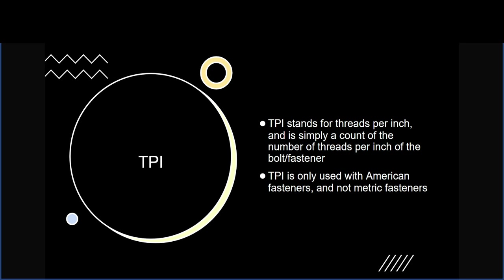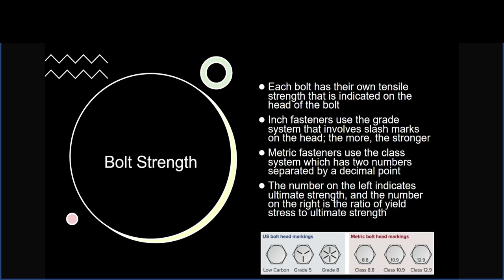TPI stands for threads per inch — it's a count of the number of threads per inch of the bolt fastener. TPI is only used with American (imperial/inch) fasteners, not metric fasteners. Each bolt has its own tensile strength indicated on the head of the bolt. Imperial fasteners use a grade system with slash marks on the head — more slash marks means a stronger bolt. Metric fasteners use a class system: two numbers separated by a decimal point, where the number on the left indicates ultimate strength and the number on the right is the ratio of yield stress to ultimate strength.